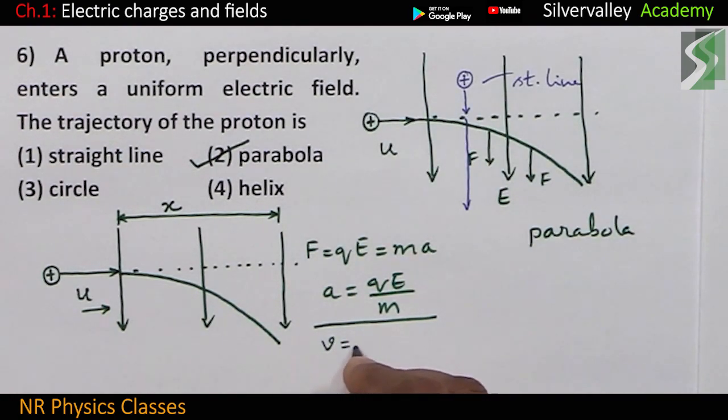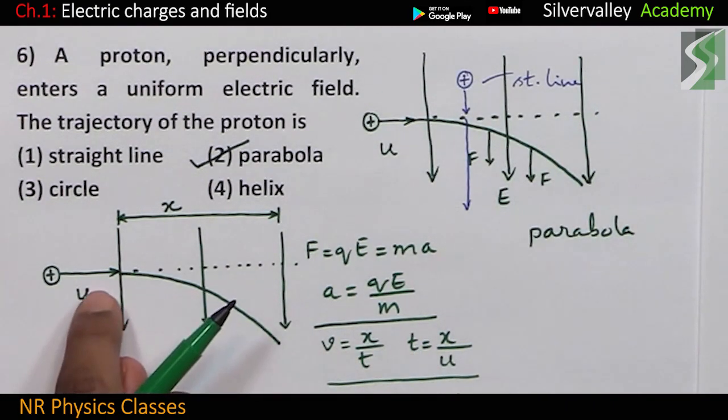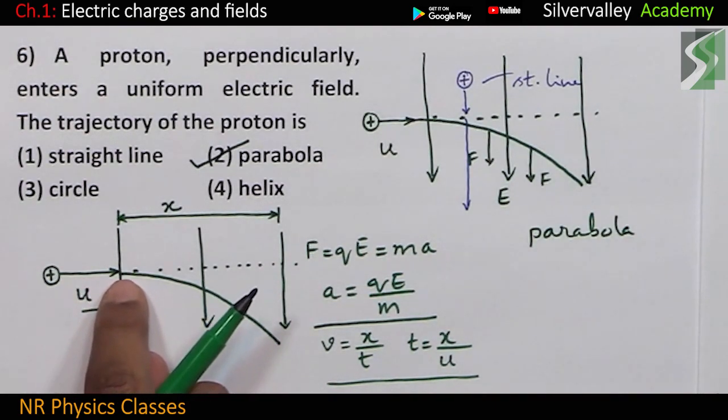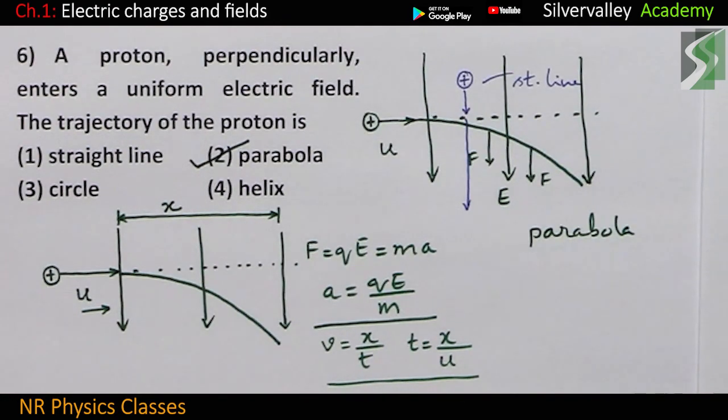Speed equal to distance by time. So, time equal to distance by speed. Speed is U, okay. Speed is U. So, we got the expression for time during which the proton covers displacement x in the horizontal direction. Fine.